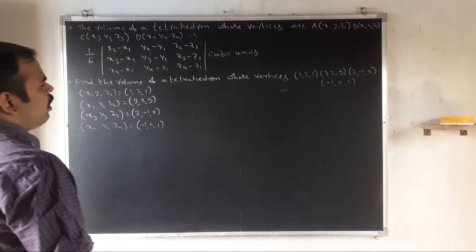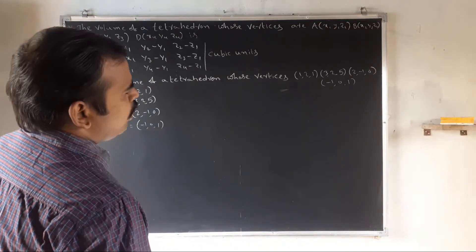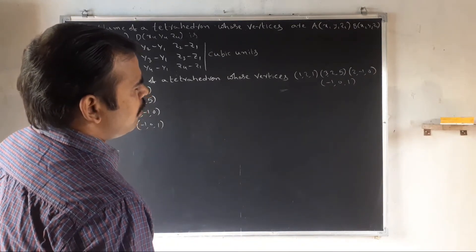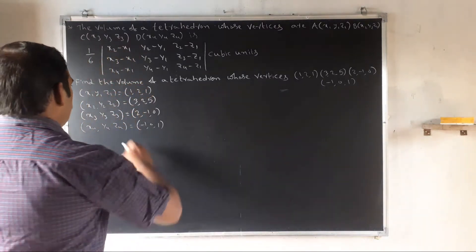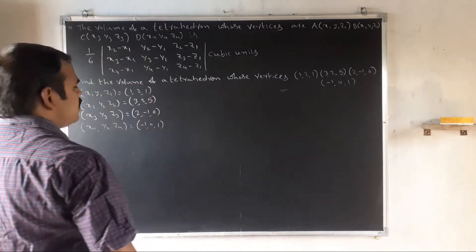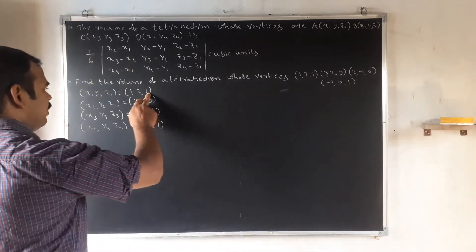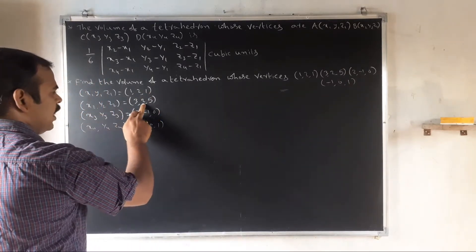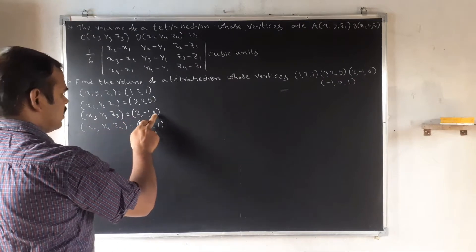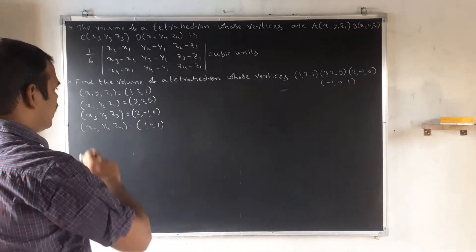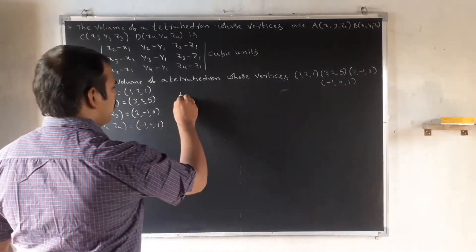For example, find the volume of the tetrahedron whose vertices are (1, 2, 1), (3, 2, 5), (2, −1, 0), and (−1, 0, 1). We identify: x1, y1, z1 = 1, 2, 1; x2, y2, z2 = 3, 2, 5; x3, y3, z3 = 2, −1, 0; x4, y4, z4 = −1, 0, 1. Now apply the volume formula.